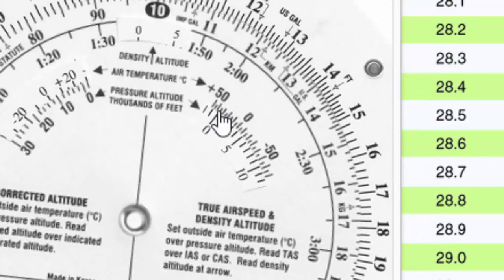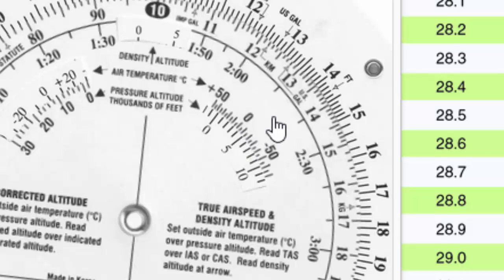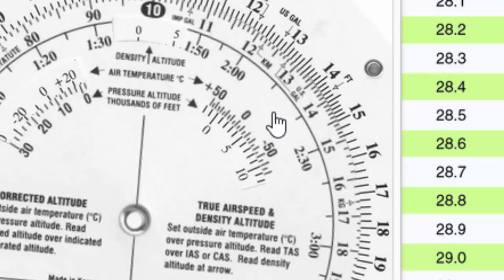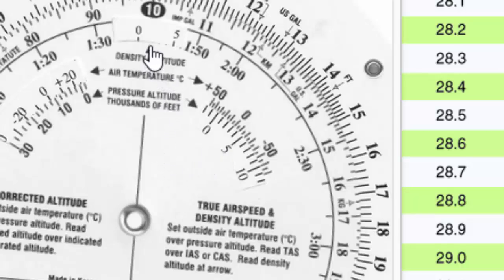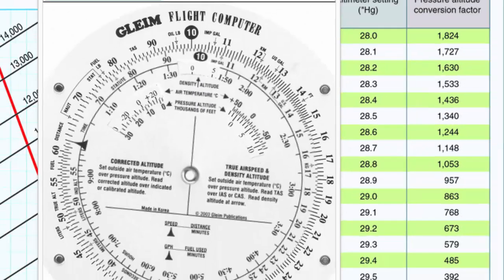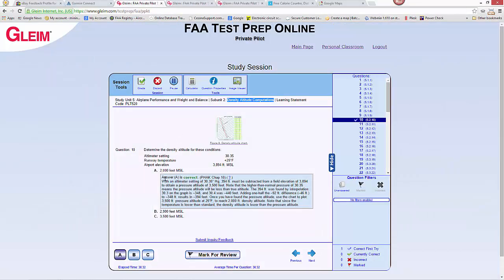The scale is in Celsius, and below there's a conversion between Fahrenheit and Celsius. 25 degrees Fahrenheit is about minus four degrees Celsius. Negative Celsius is to the right, positive Celsius is to the left. So we put minus four degrees Celsius across from our 3,500 feet, and up here we read our density altitude, which appears to be about 2,000 feet. This is a more crude method but still gets us the correct answer.